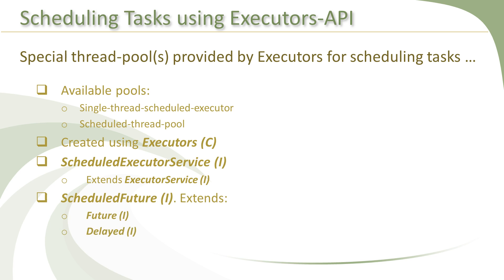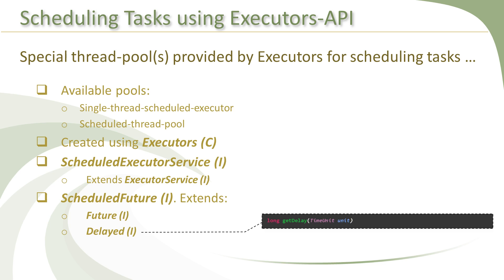All four methods return an instance of the ScheduledFuture interface, which can be used to query and control the execution of particular tasks. The ScheduledFuture interface does not have any methods of its own — it extends two interfaces: Delayed and Future. We have been using the Future interface for many of the functionalities provided by the executors framework, whereas the Delayed interface is new. It has only one method, getDelay, that takes a time unit parameter and returns the remaining delay for the next execution of the task in the given time unit.